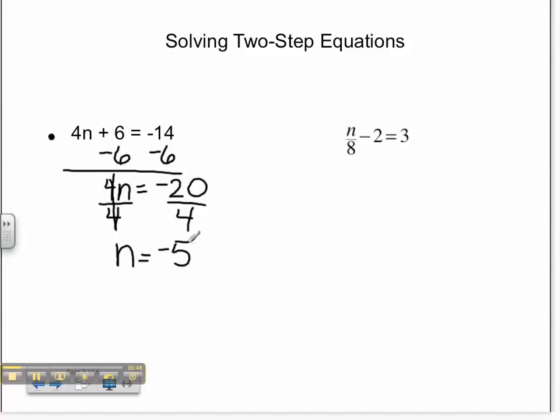We always want to check our work, so we're going to replace negative 5 for n in our equation. 4 times negative 5 is negative 20. Negative 20 plus 6 equals negative 14. We're going to look up to our original problem, and since negative 14 is the solution, our answer is correct.